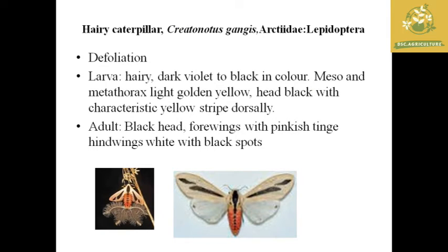The next pest is the hairy caterpillar, with scientific name Creatonotos gangis, which comes under the family Arctiidae and order Lepidoptera. It is one of the colorful moths present in sweet potato and causes defoliation similar to other Lepidoptera insects. The larva is hairy with a dark violet color. The adult has a black head, four wings with a pink tinge, and hind wings with black spots.